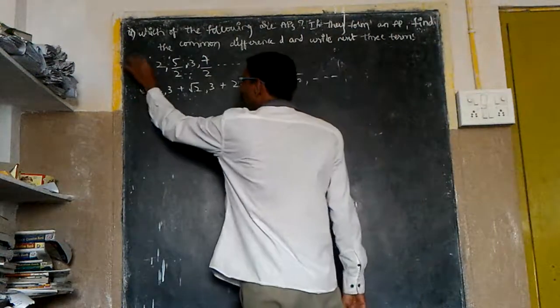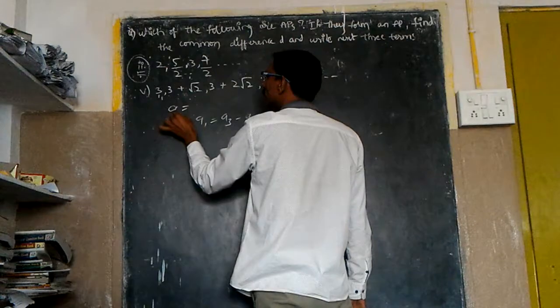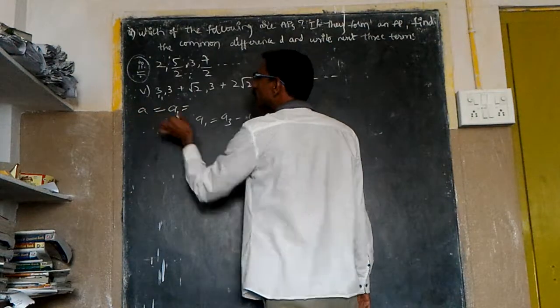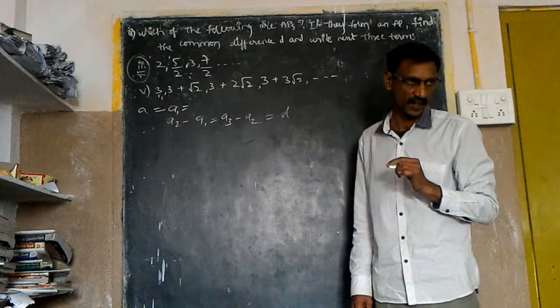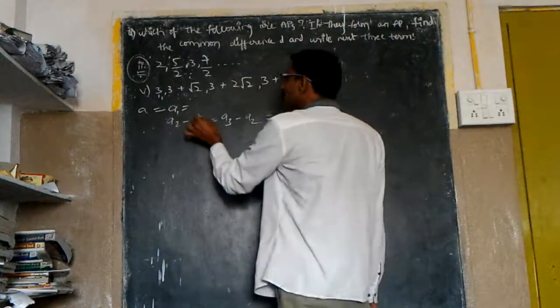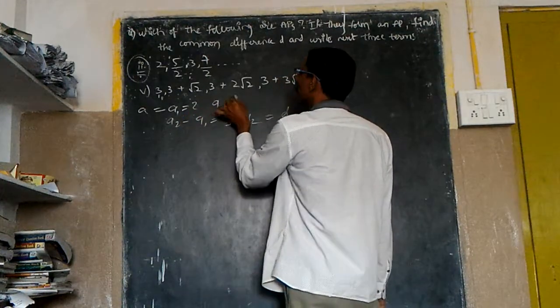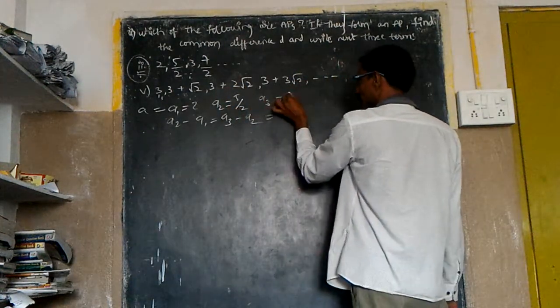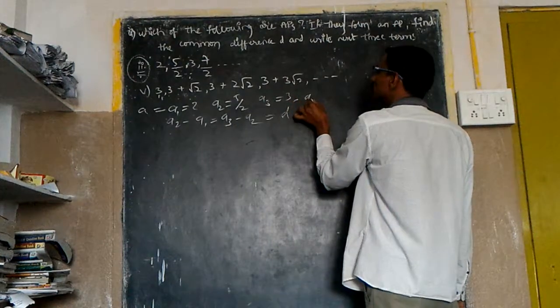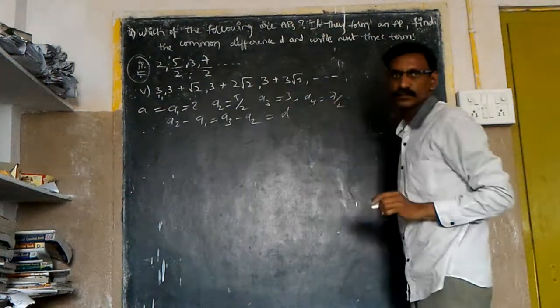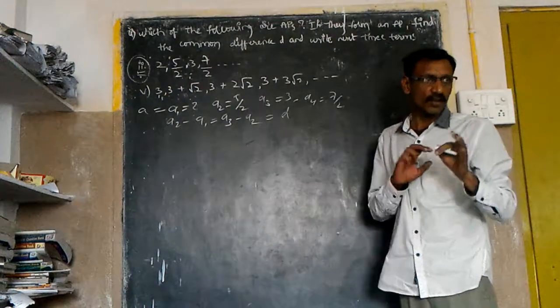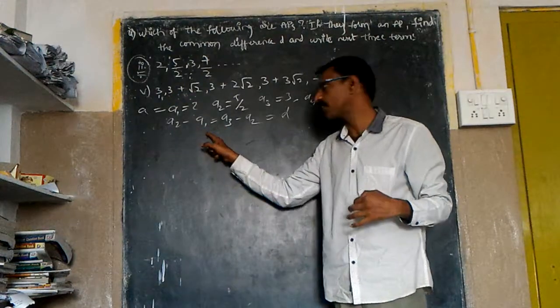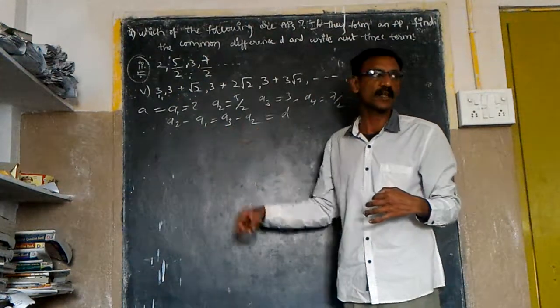Let's see the first one, in which the first term is named A1. The first term is A, which is nothing but A1. That is given by 2, and A2 equals 5/2, and A3 equals 3, and A4 equals 7/2, and so on. You have to check whether they are in arithmetic progression or not. To do that, you take A2 minus A1 equals A3 minus A2. Then it is in arithmetic progression.